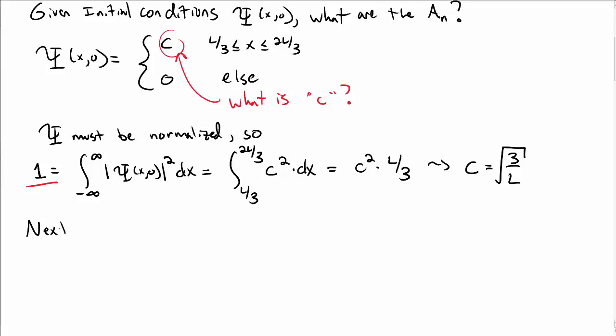Okay, so now that we know C, we can figure out the a sub n's by putting T equal to 0 into our general solution from above, and then use the so-called Fourier trick.